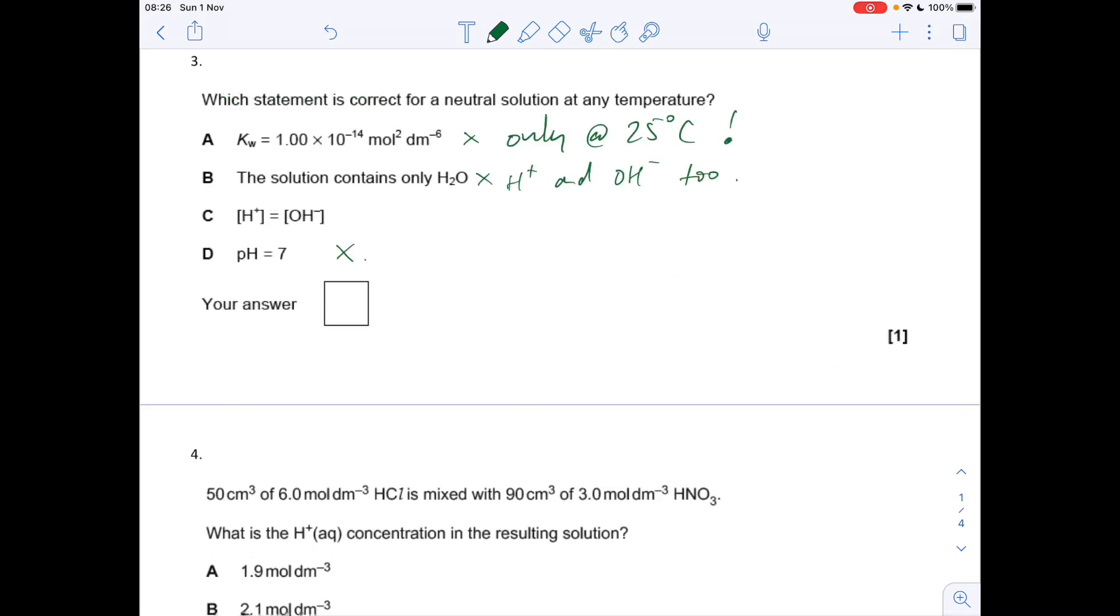Question 3: which statement is correct for a neutral solution at any temperature? Kw is only 1 times 10 to the minus 14 at 25 degrees C. Remember water dissociates, so you're also going to have H+ ions and OH- ions, so there is more than just water in the neutral solution and the pH isn't always 7. Therefore, C is the right answer: the H+ concentration is always equal to the OH- concentration for a neutral solution.